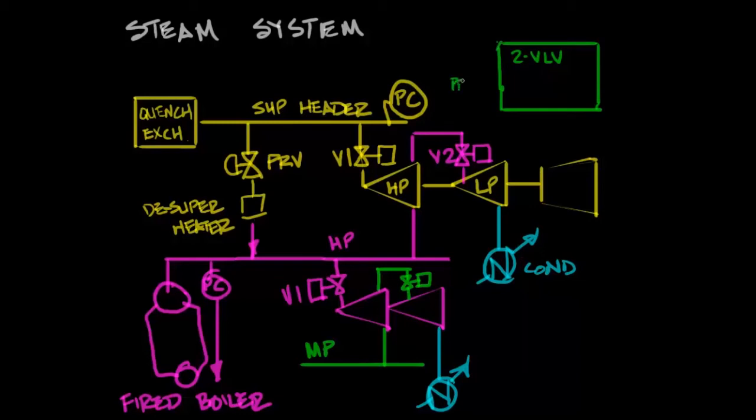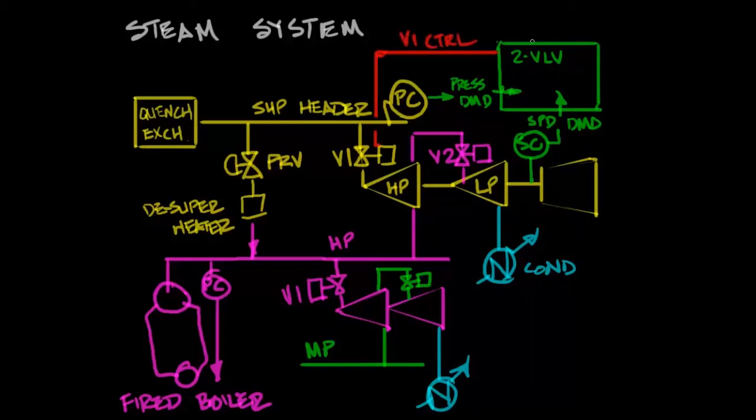Looking at our two valve algorithm it's going to take a pressure demand from a pressure controller on the SHP header and a speed demand from a speed controller that's watching the turbine speed. The output of that two valve will send an output to control V1 and another output to control V2.